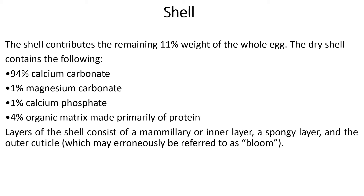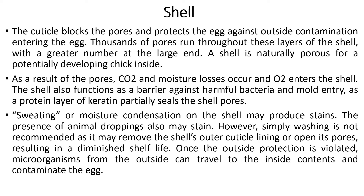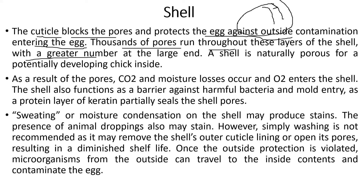As you can see, the shell is divided into three main layers: the inner layer, the spongy layer, and the cuticle layer — the outermost and hardest layer which covers the entire egg. The cuticle layer blocks the pores and protects the egg against outside contamination. Thousands of pores run throughout these layers, with a greater number at the larger end of the egg.